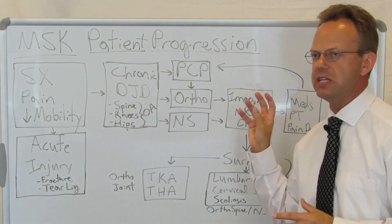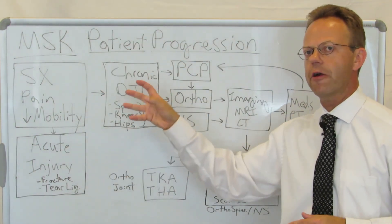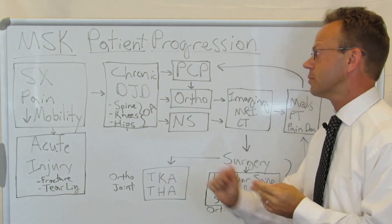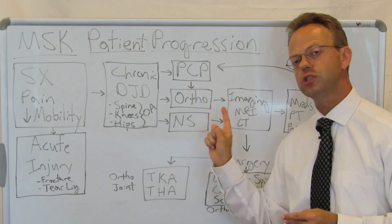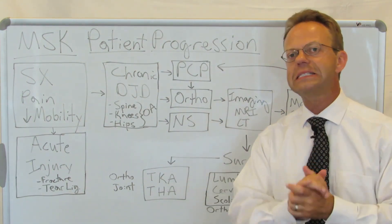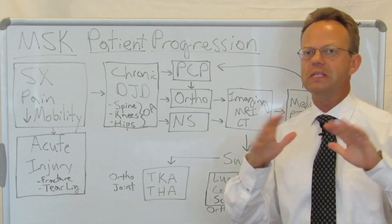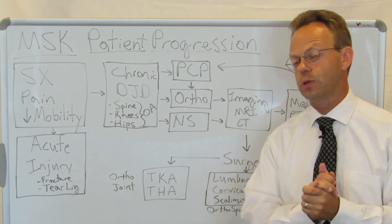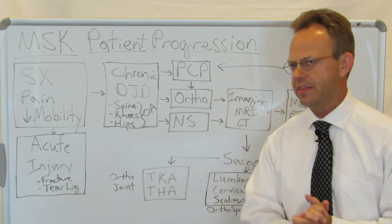We're going to spend the rest of the time talking about the patient progression for chronic DJD and not for acute, because this is the area that involves most of an employer's spend. Patients will either find their way to a primary care physician, or they will go to an orthopedist, or sometimes to a neurosurgeon — because neurosurgeons actually do the majority of their work on the spine, not the brain. PCPs are notoriously not great at diagnosing and treating chronic degenerative joint disease, so it's highly likely they would end up referring to an orthopedist.